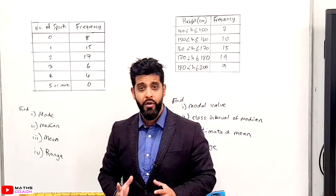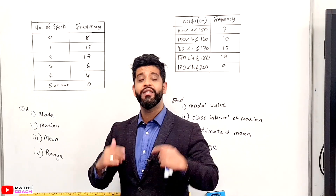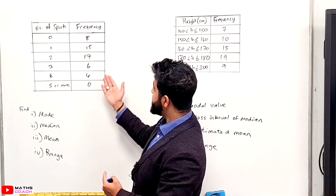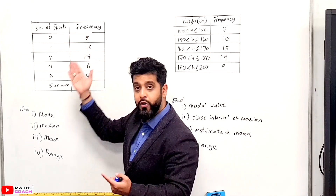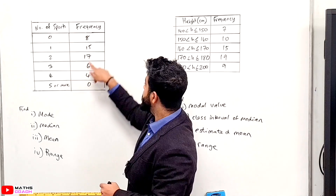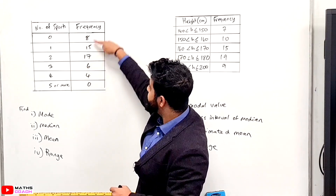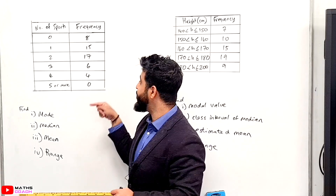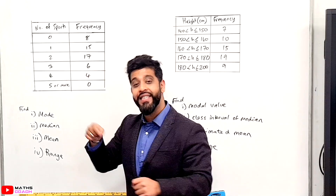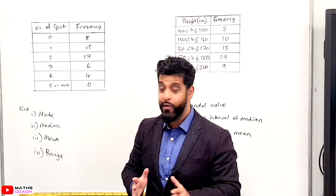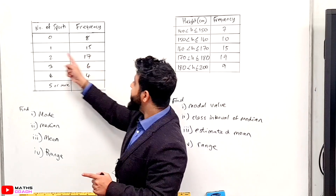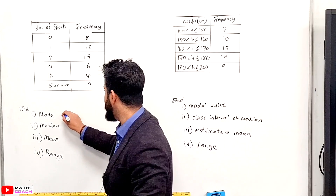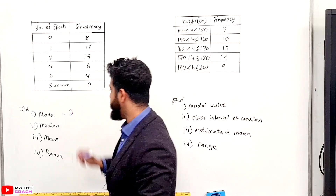To begin with, we want to find the mode. The mode is the most common number — what is the most common amount of sports played? You can see here 17 comes up the most, but students often make the mistake of saying 17 is the mode. But 17 is not the mode. The mode is two. Two sports played is the mode.